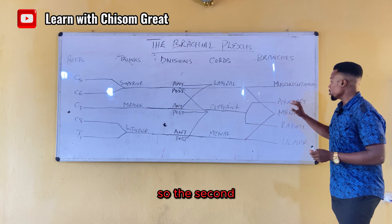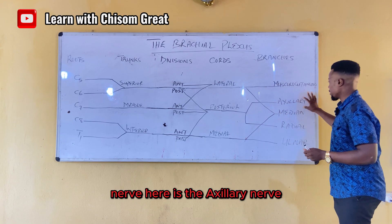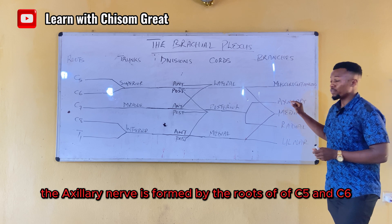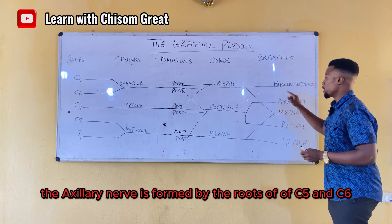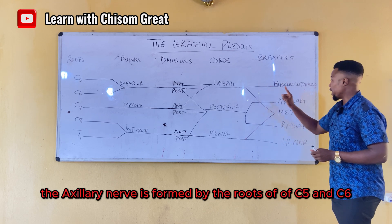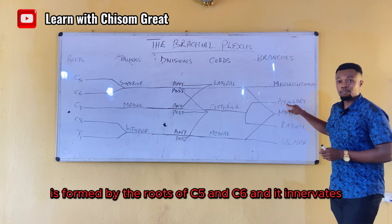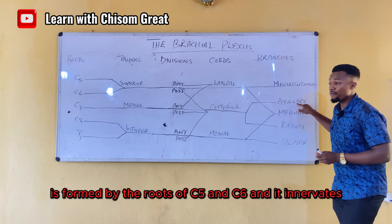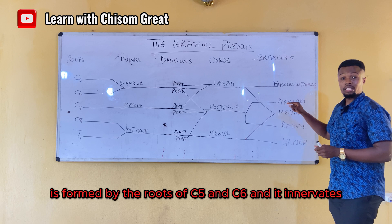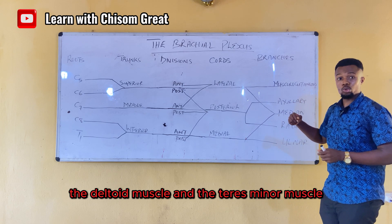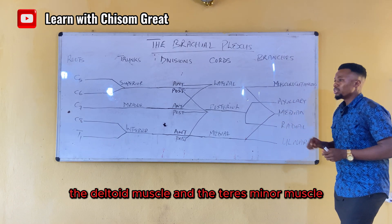The second nerve is the axillary nerve. The axillary nerve is formed by the roots of C5 and C6. It innervates the deltoid muscle and the teres minor muscle.